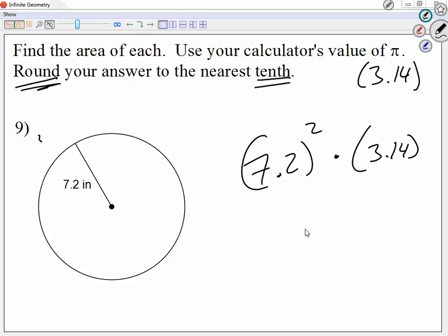Round to the nearest tenth. 22.6. Thank you. 22.6. Did you do 7.2 squared? 162.7? Okay. So 162.8? Okay. Thank you.